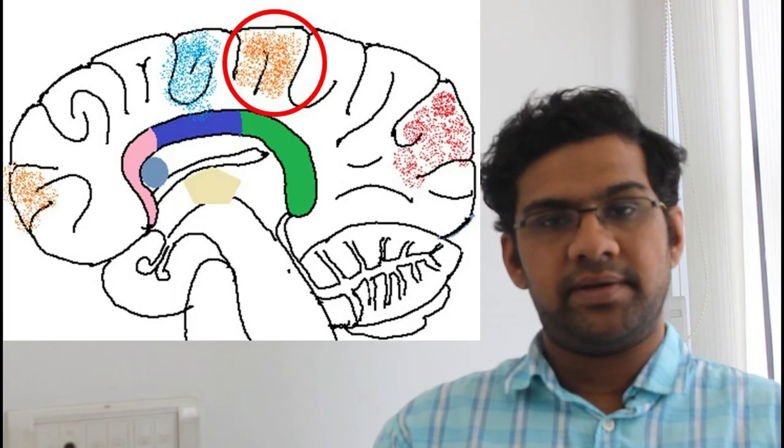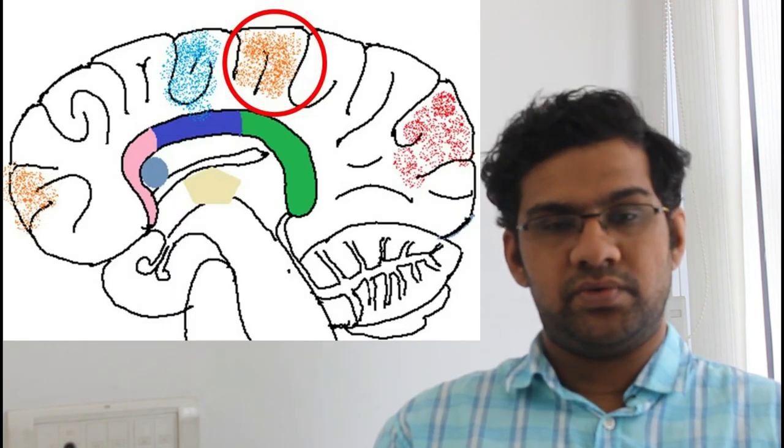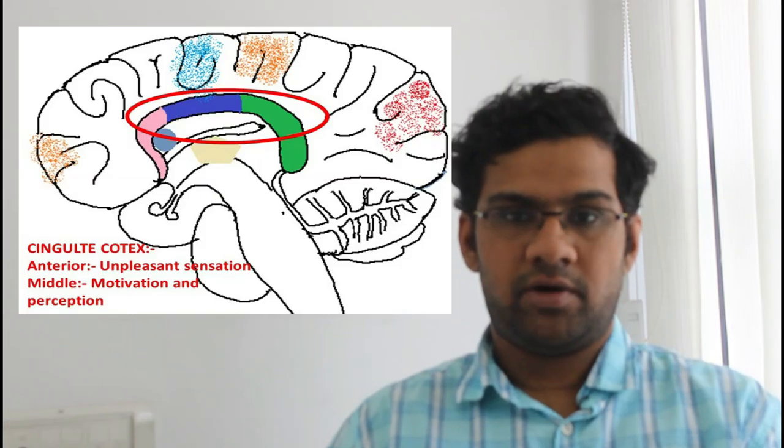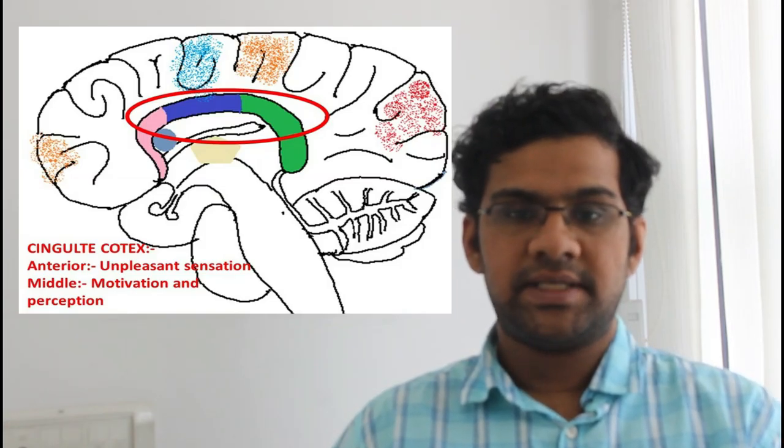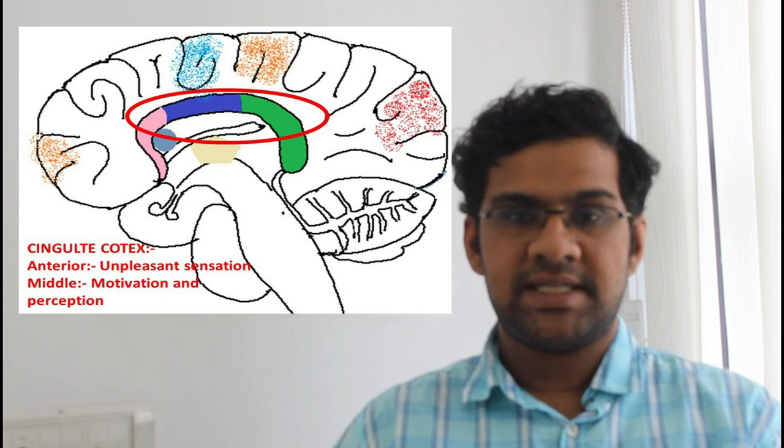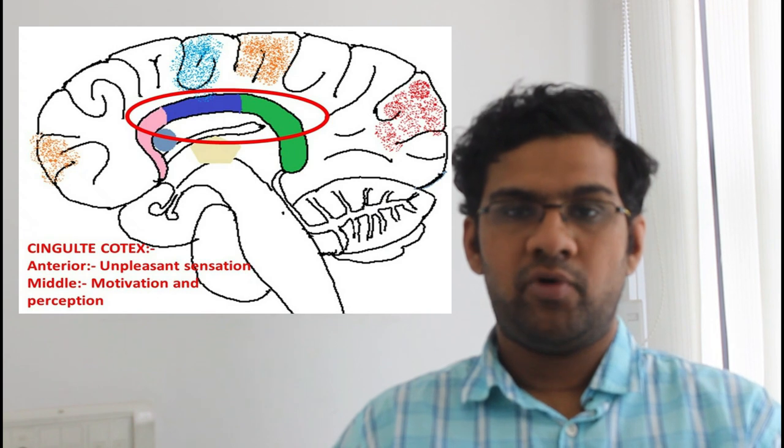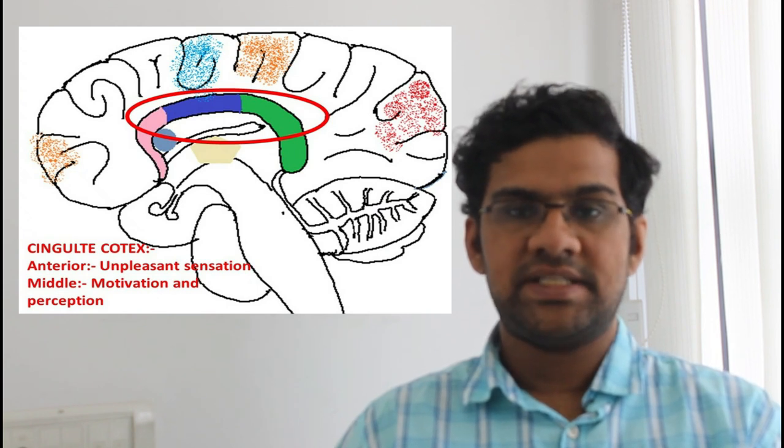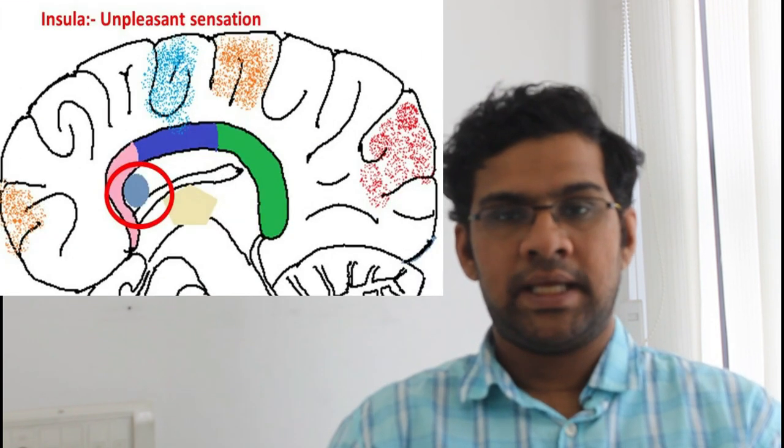Most frequently activated brain region is primary and secondary somatosensory cortex of the brain, which contributes to localization of the itch, perceiving the intensity of the itch, and recognizing the itch sensation. The other important activated areas are cingulate cortex. Anterior cingulate cortex helps in analyzing the unpleasant sensation, whereas the middle and posterior cortex help in motivation and perception of the sensation. Insula also recognizes the unpleasant sensation which is caused due to itch transmission.